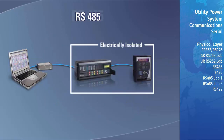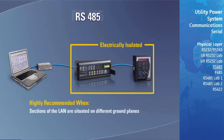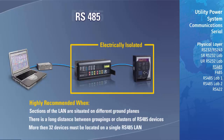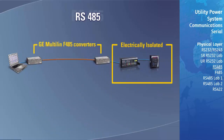There are many circumstances where it is highly recommended that sections of the RS-485 LAN be isolated from each other to provide reliable operation. The three most common situations where isolation is recommended are: when sections of the LAN are on different ground planes such as in different buildings; when there is a long distance between clusters of RS-485 devices; and when more than 32 devices must be on a single RS-485 LAN. By using two GE Multilin F-485 converters, the required isolation can be achieved. Both converters are configured to convert signals between RS-485 and fiber. The fiber optic cable, being an insulator, provides the necessary isolation.